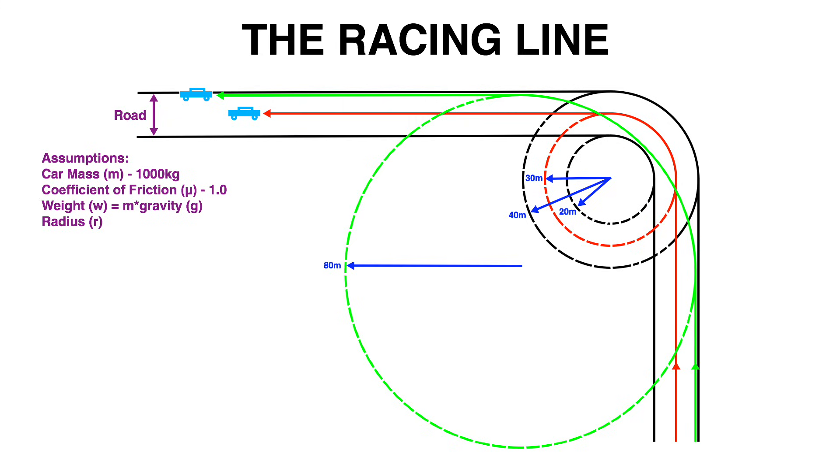If we assume to have a 1,000 kilogram car with tires which have a frictional coefficient of 1 we can determine the maximum velocity which the vehicle will reach based on the radius of the corner which it is driving around.